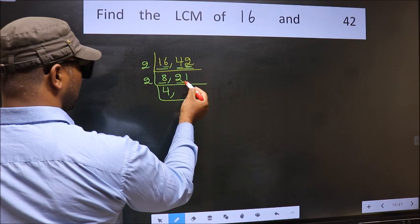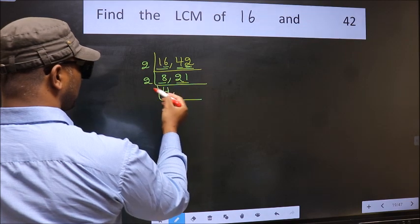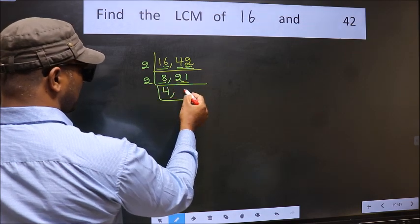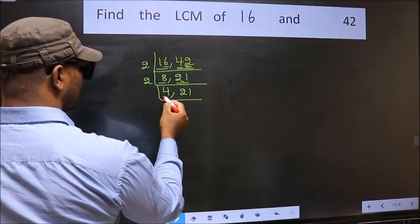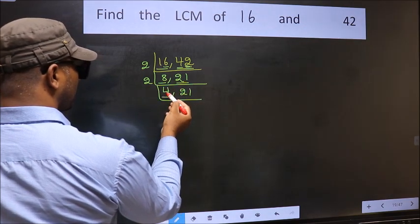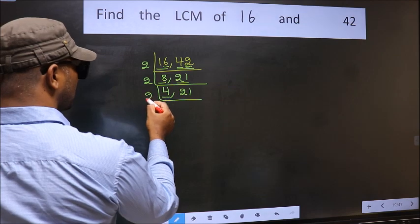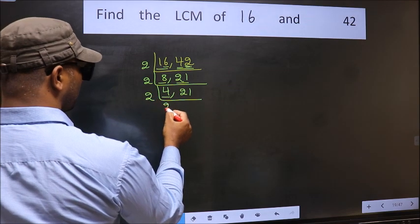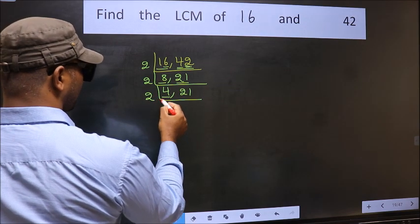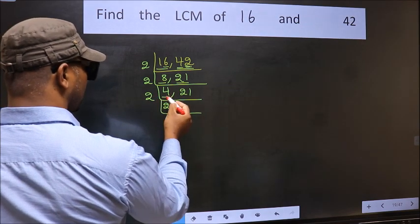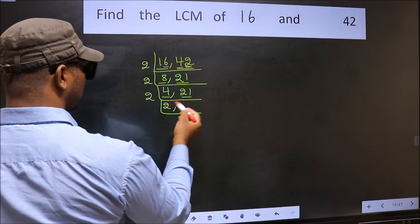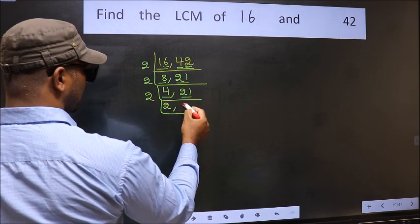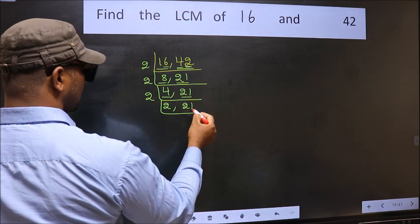The other number 21 is not divisible by 2, so we write it down as it is. Now we got 4 here — 2 times 2 is 4. The other number 21 is not divisible by 2, so we write it down as it is.